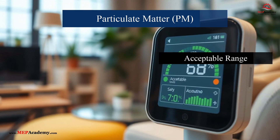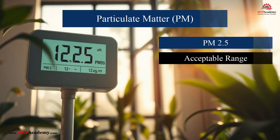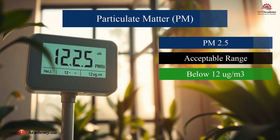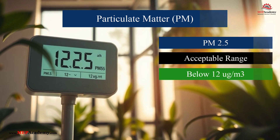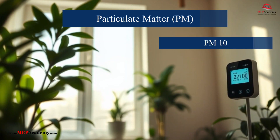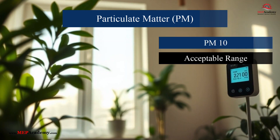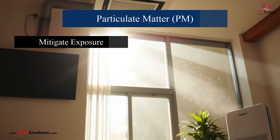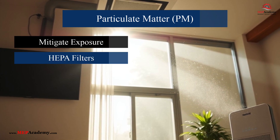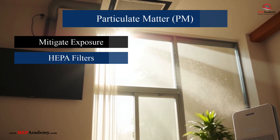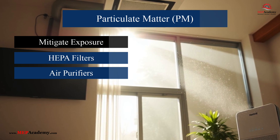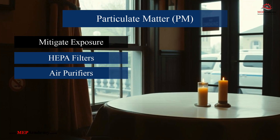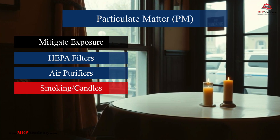Acceptable levels: PM2.5 below 12 µg/m³ (micrograms per cubic meter) is considered safe; PM10 below 50 µg/m³ is the recommended limit. To mitigate exposure, use high-efficiency particulate air filters in HVAC systems or portable air purifiers, reduce indoor sources of particulates such as smoking and burning candles.